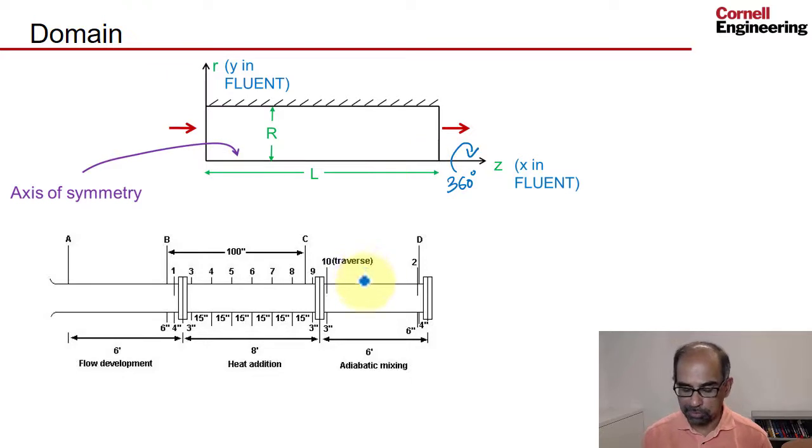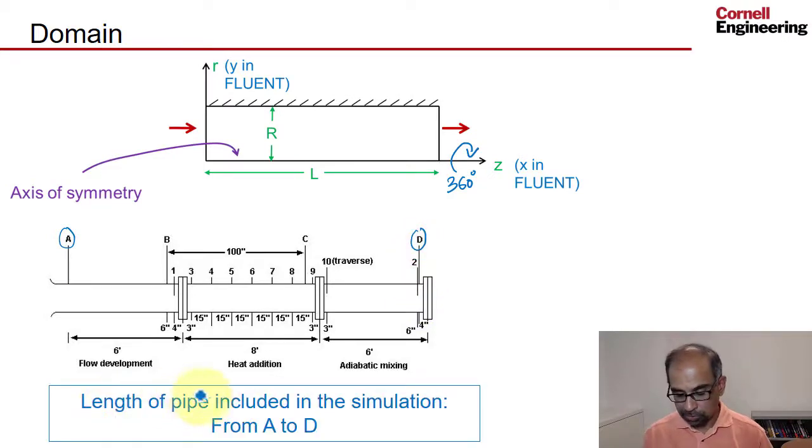To figure out what is the length of the pipe we need to use in the simulation, we make a choice. Here is the schematic of the experiment. A is where there's a pressure transducer at the start of the flow development section. Location D also has a pressure transducer there at the end, at the end of the adiabatic mixing section. So we say that the length of the pipe included in the simulation is from A to D.